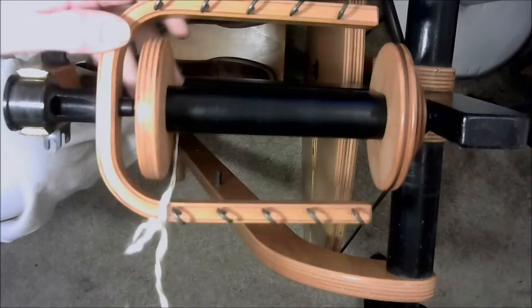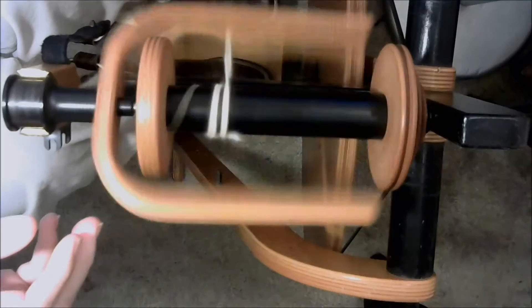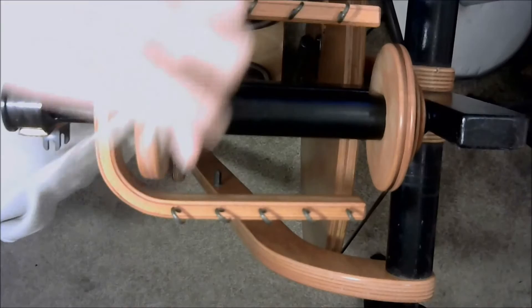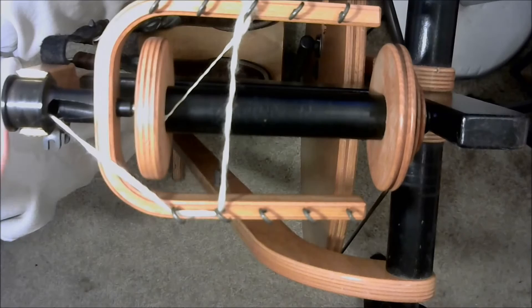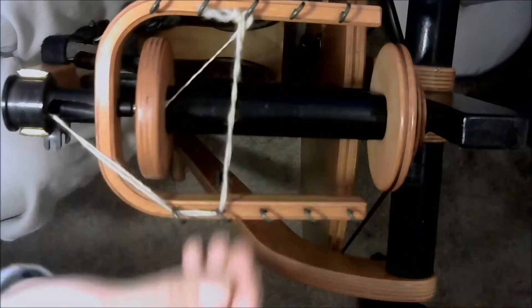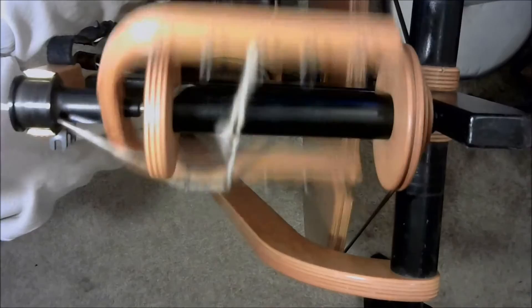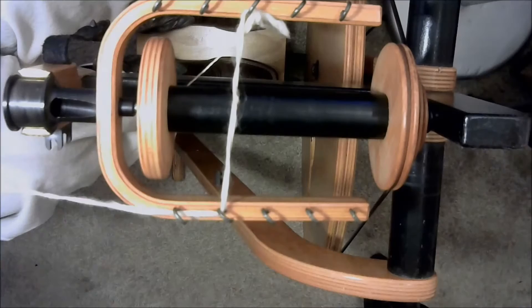The other thing that I do, and this is how I manage the difference in diameters between the flyer and the bobbin. Normally I would have my working yarn coming like this and I would spin in this direction like so. If you want to reduce the draw, feed your leader to the opposite side, crossover like that. This reduces in practical terms the difference in diameter between your bobbin and your flyer.